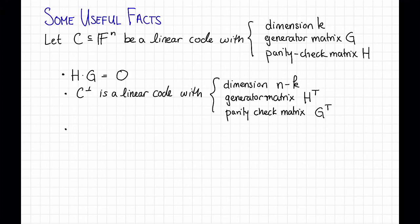Next fact. The distance of C is the minimum weight of any non-zero codeword in C. We argued why this was true in the context of the Hamming code, and it's still true here for any linear code. All we needed was linearity.